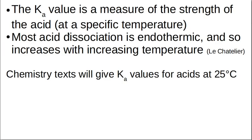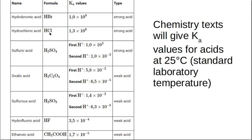The Ka value is a measure of the strength of the acid, and because there's a delta H for this reaction, it's going to vary with temperature — Le Chatelier's principle applies. Since most acid dissociation is endothermic, acids dissociate more with increasing temperature. Most chemistry textbooks give a Ka value at 25°C, which is often assumed to be the standard laboratory temperature.